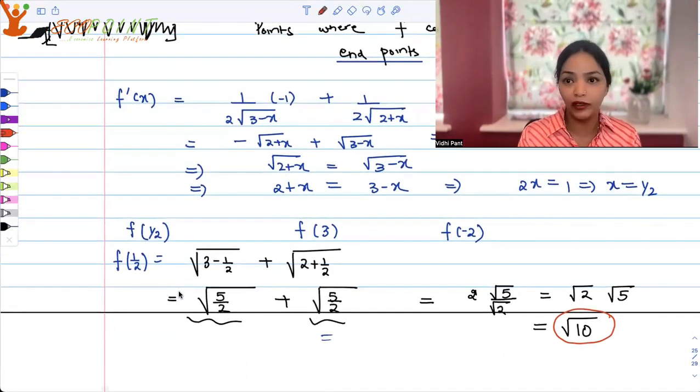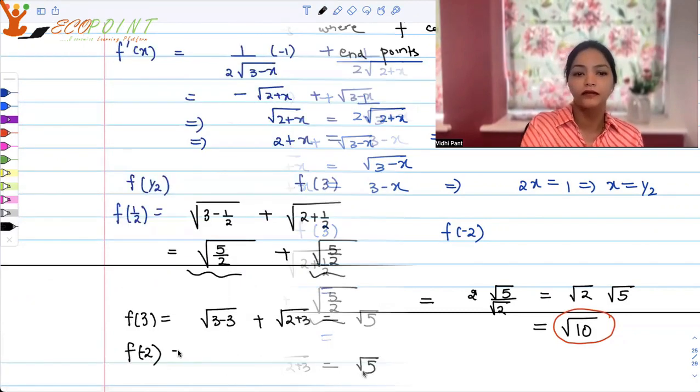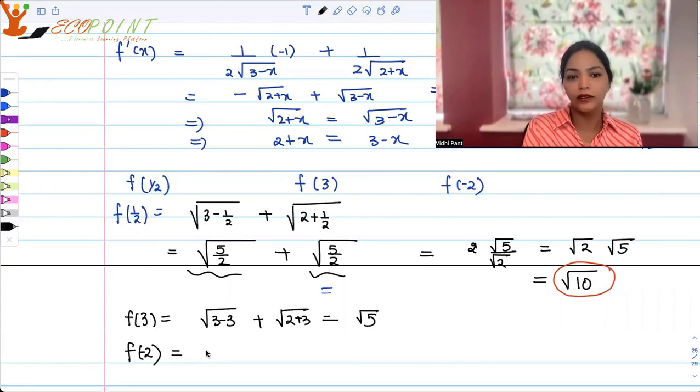At the stationary point, the value is root 10. I don't know whether this is min or max as of now, but I know that this is one of the values which can be min or max. Apart from that, I need f at 3. f at 3 will be 3 minus 3 plus 2 plus 3, so it's going to be root 5. f at minus 2 is 3 minus minus 2 gives you plus 2 plus 2 minus 2, so that again gives you root 5.